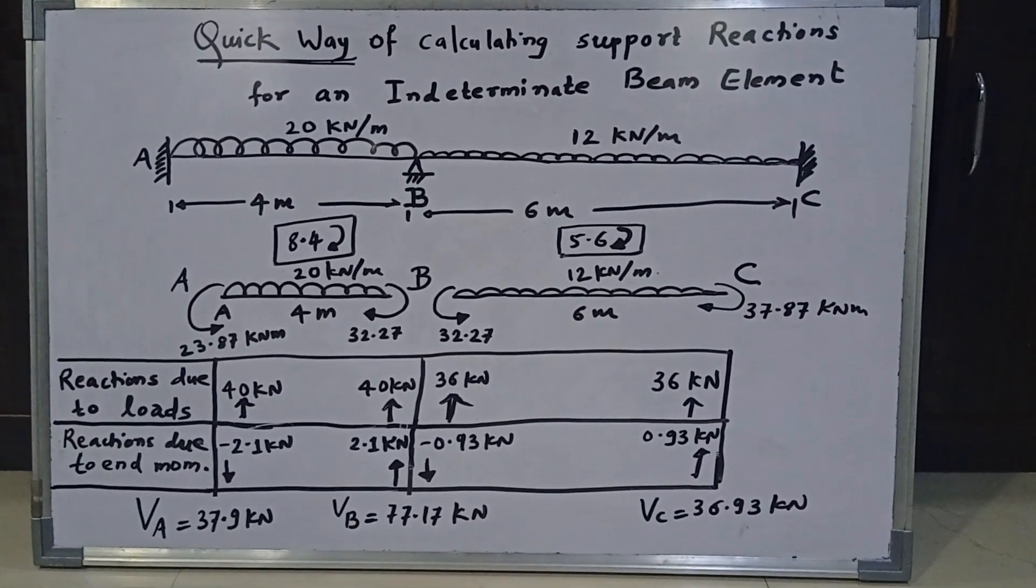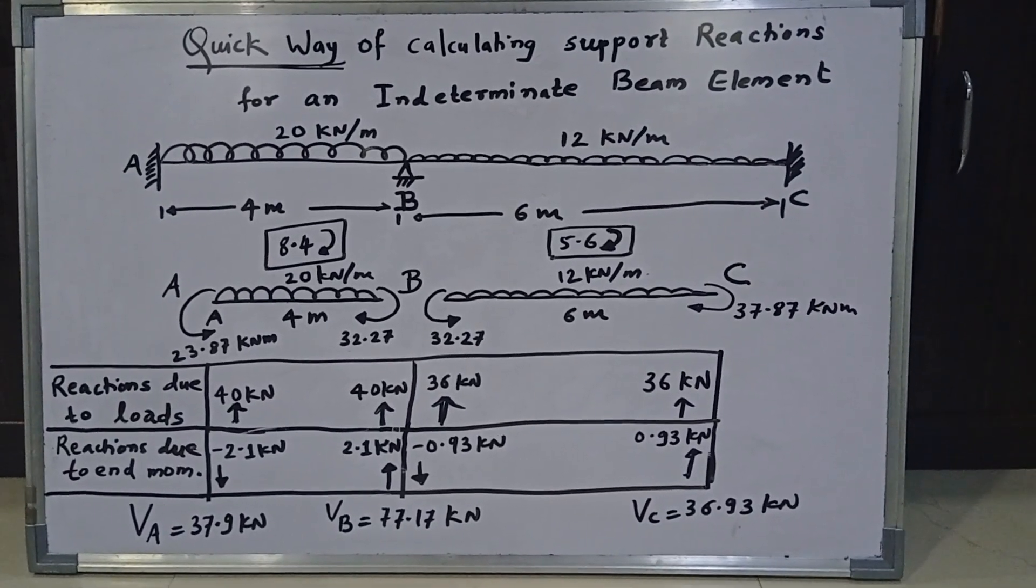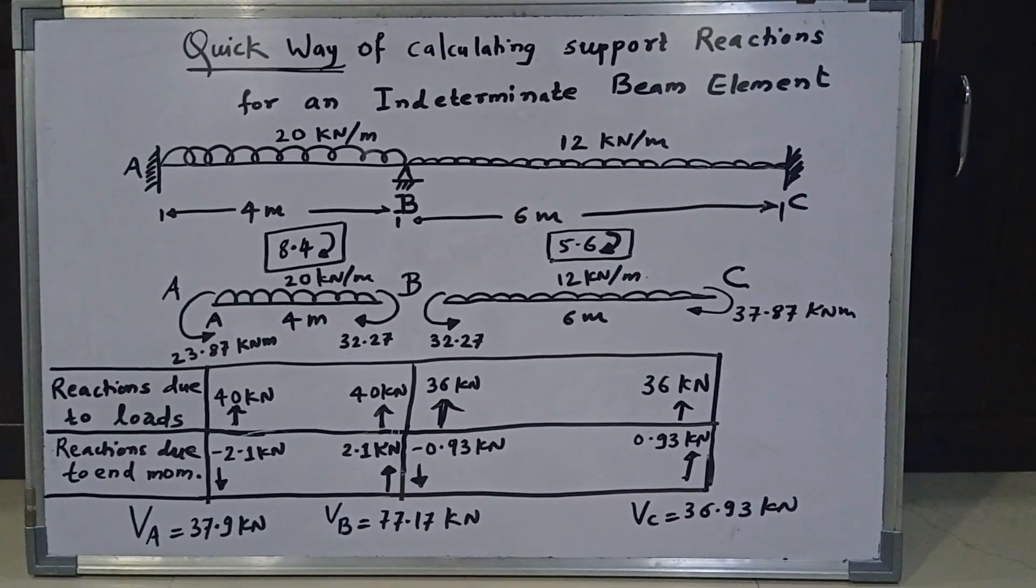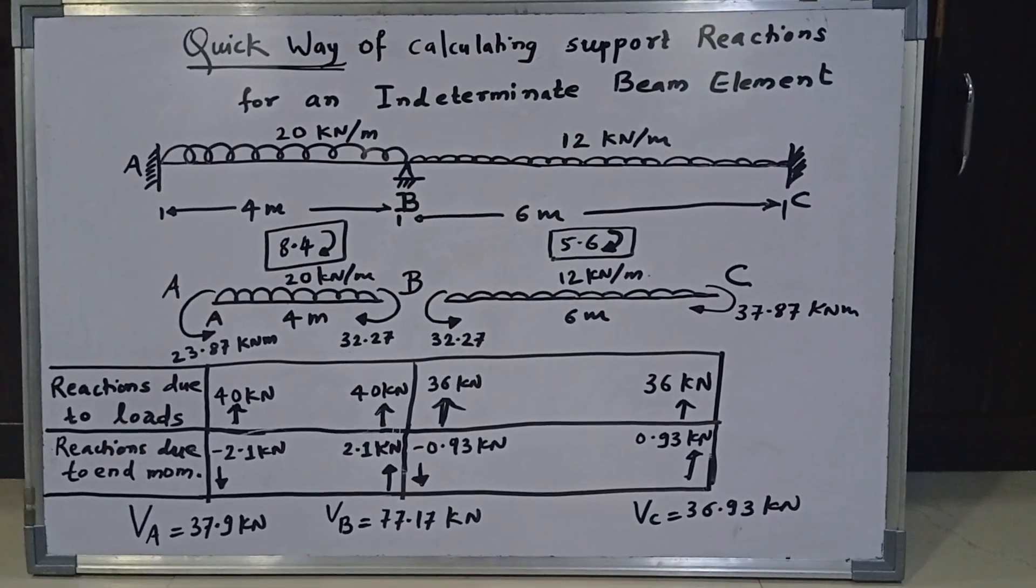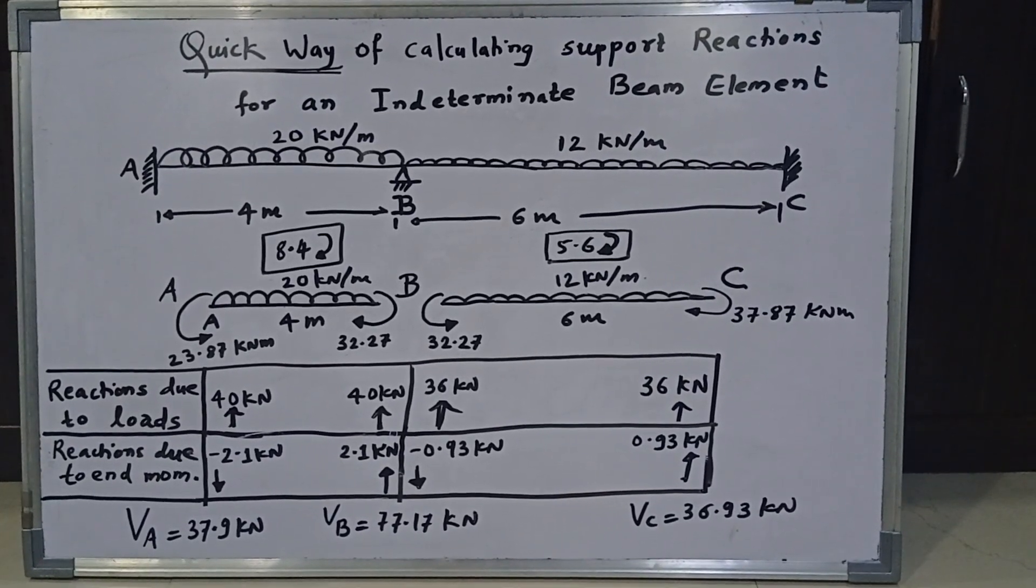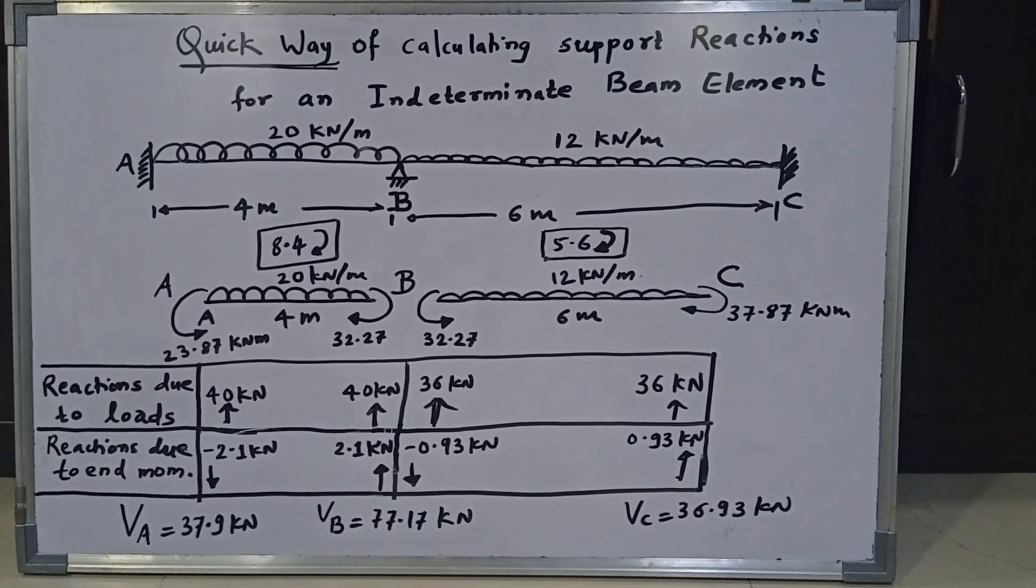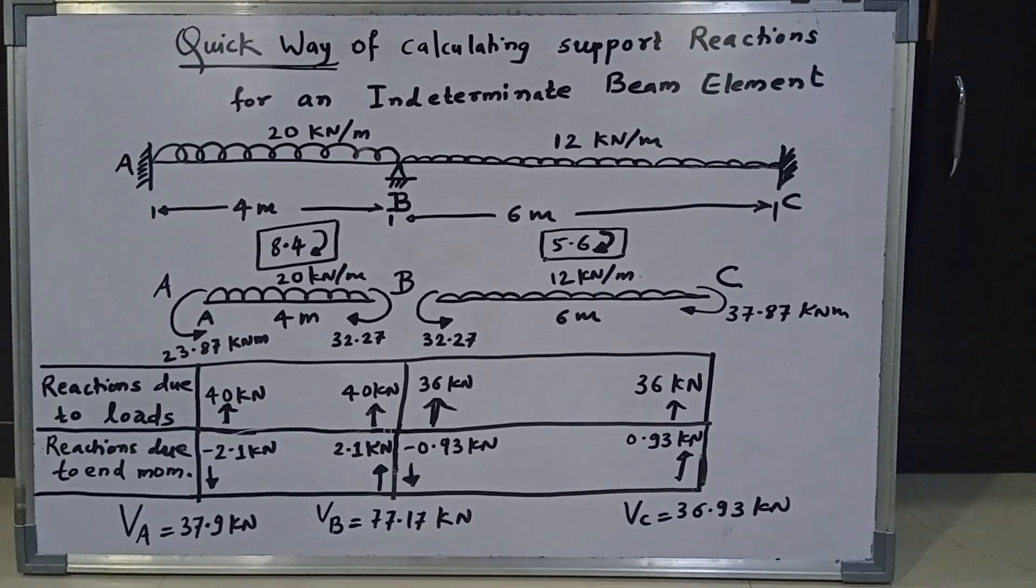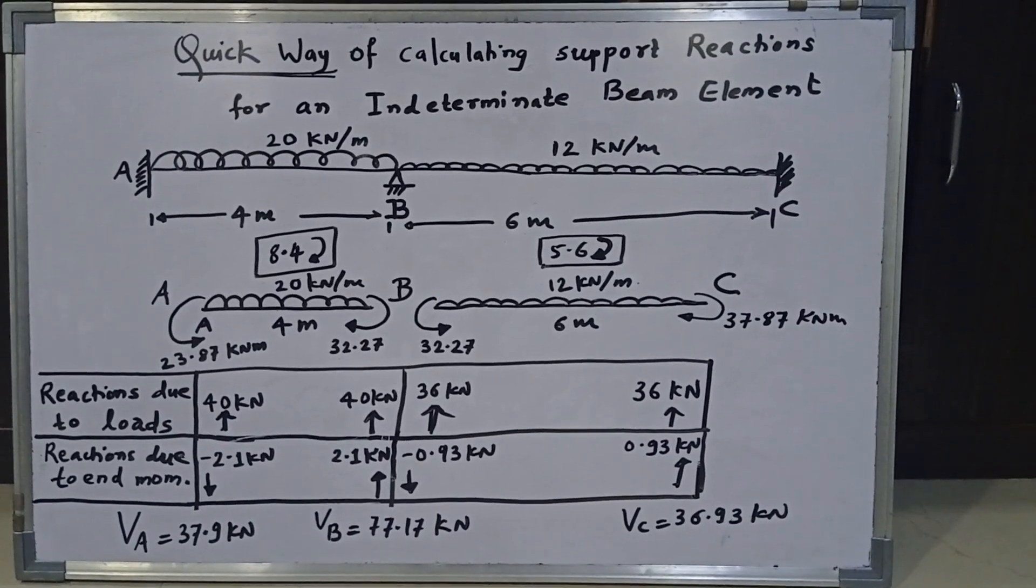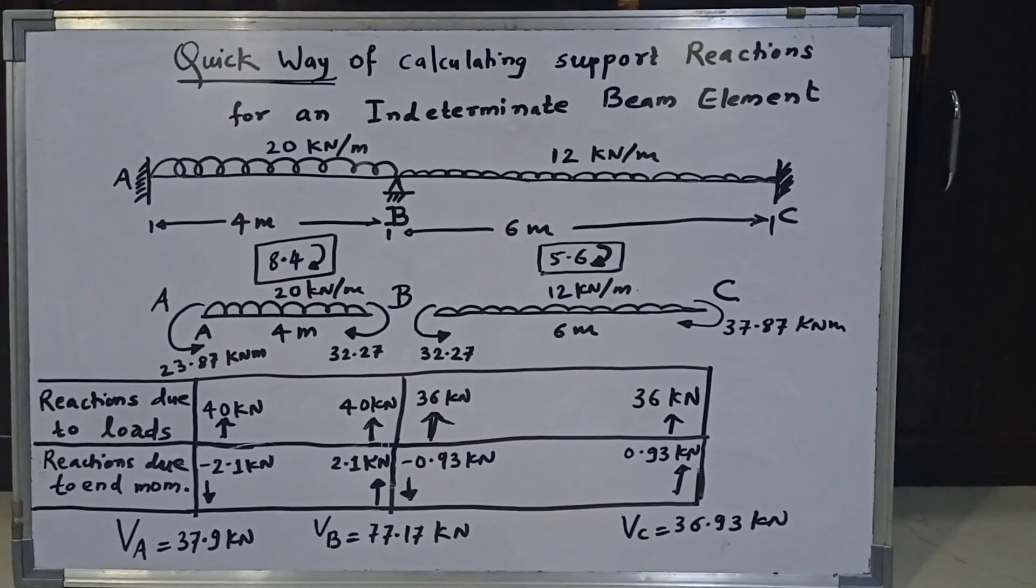And therefore, the reactions at A and B should be such that they should offer or rather they should set a restoring or resisting moment. That means they should both together, they should set an anticlockwise moment. And therefore, as shown in the last row and the first column, the reaction at A must be downwards and the reaction at B must be upwards. So that together they form an anticlockwise moment. As we have learnt in engineering mechanics that two equal and opposite forces, I mean parallel forces, I mean parallel forces separated by a certain practical distance, they constitute a couple.